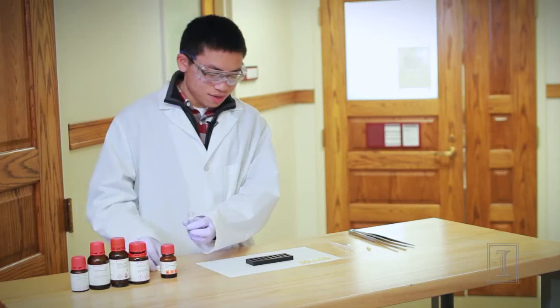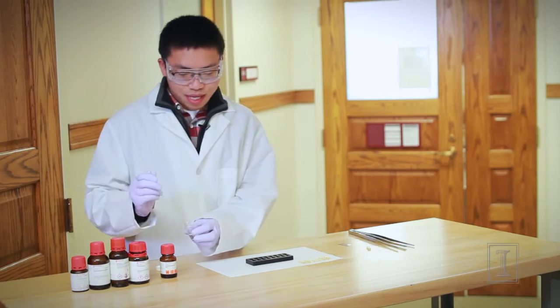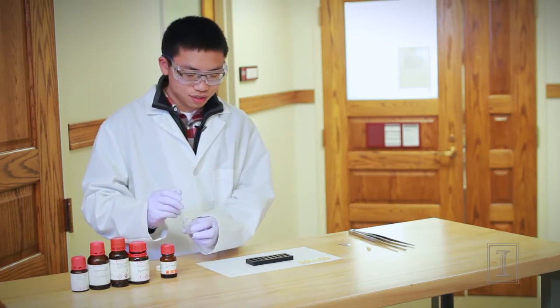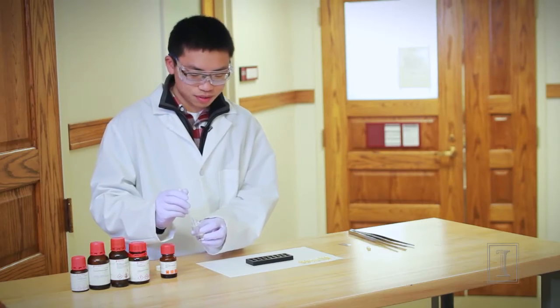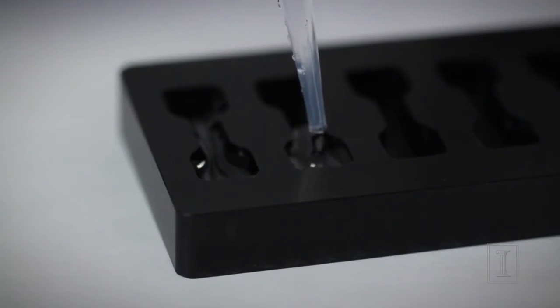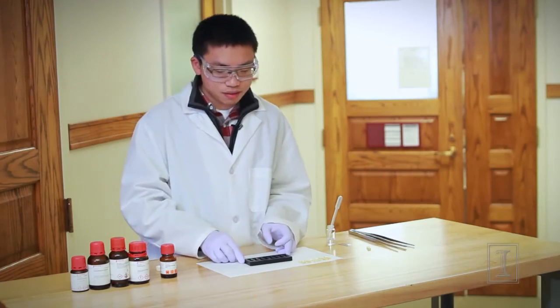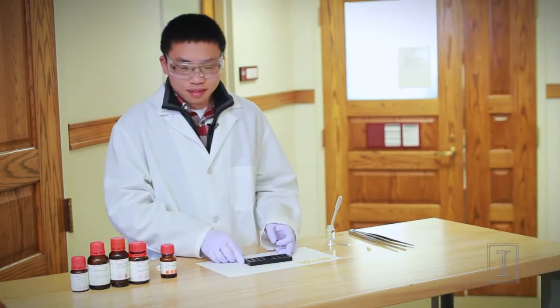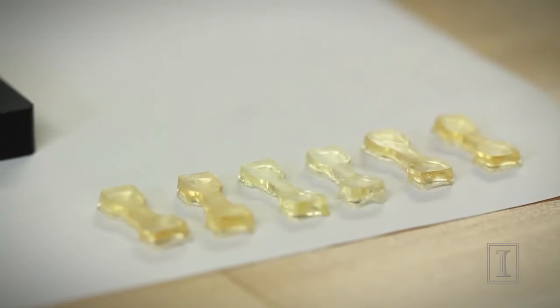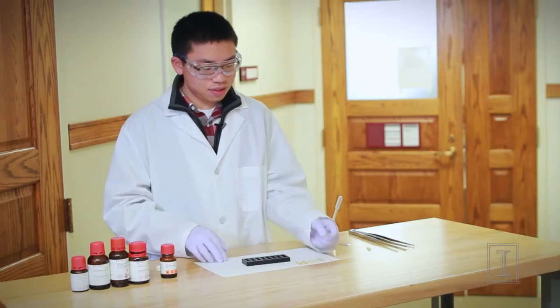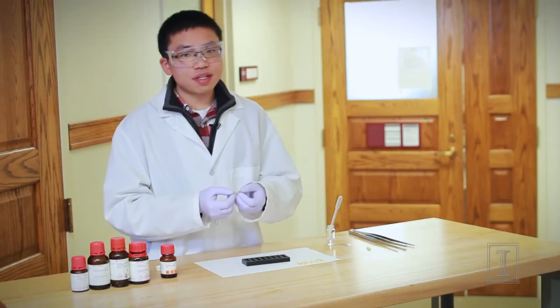Then we add this pre-polymer solution into the dog bone shape mold and let it cure at room temperature for about one day. Then we can get this dog bone shape material for our self-healing application.